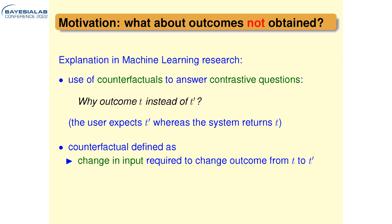In machine learning research, it was proposed to use counterfactuals — although the term is abused a bit, since counterfactuals usually refer to causal relations, but here it's not necessarily causality. A counterfactual is simply: what change in input would be necessary to get a different outcome? What input features need to have different values for my outcome to change?